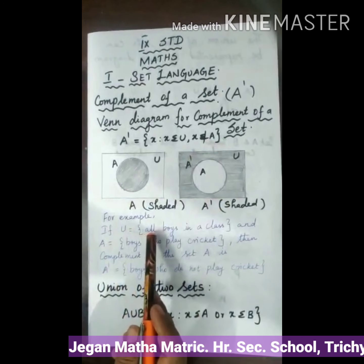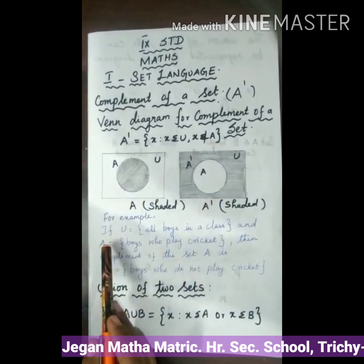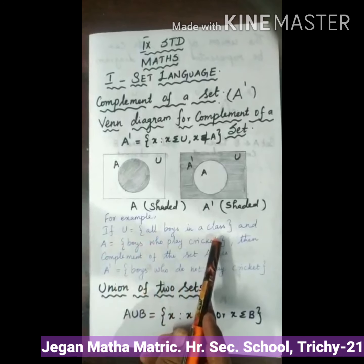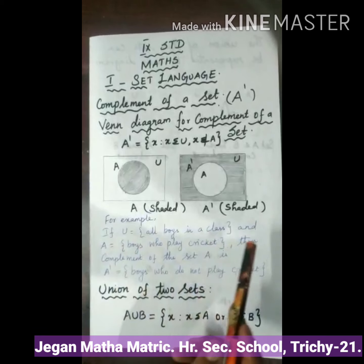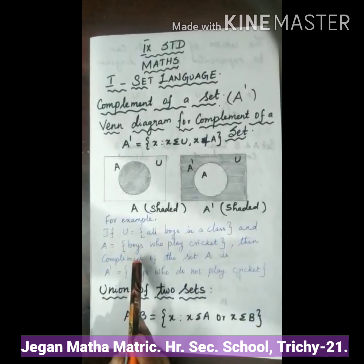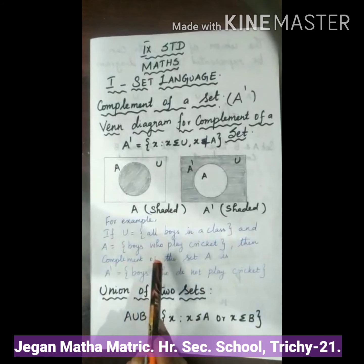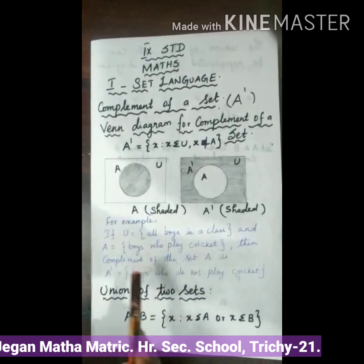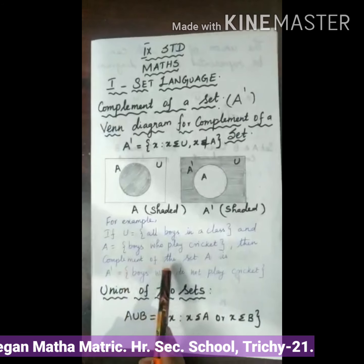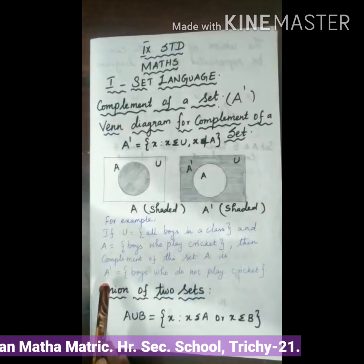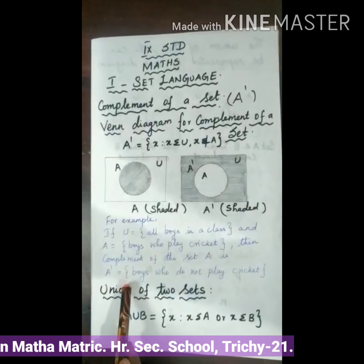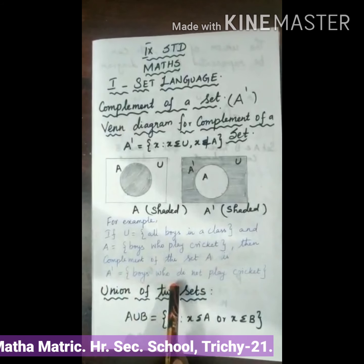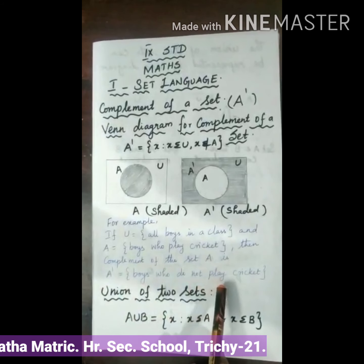For example, if U is equal to all boys in a class and A is equal to boys who play cricket, then the complement of set A — A' — is equal to the set of boys who do not play cricket.